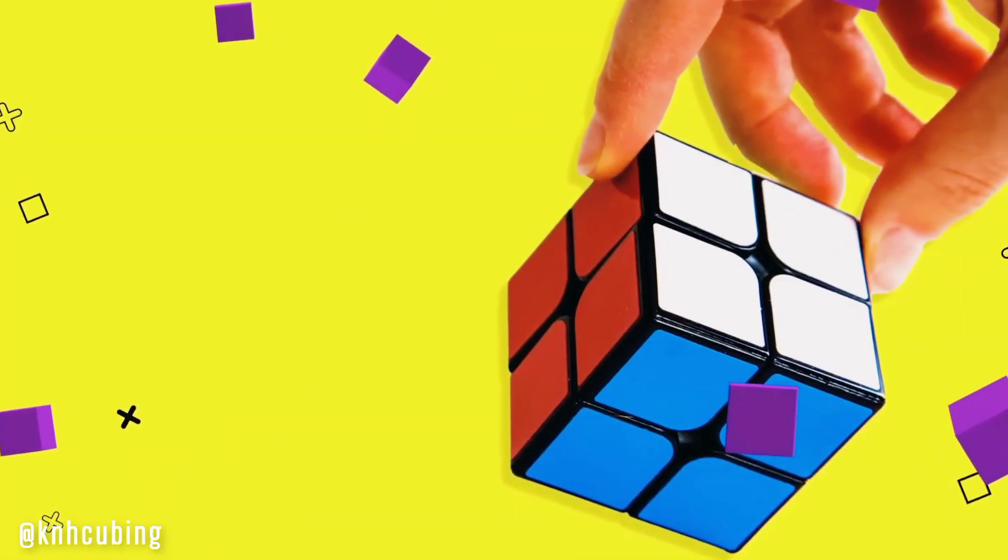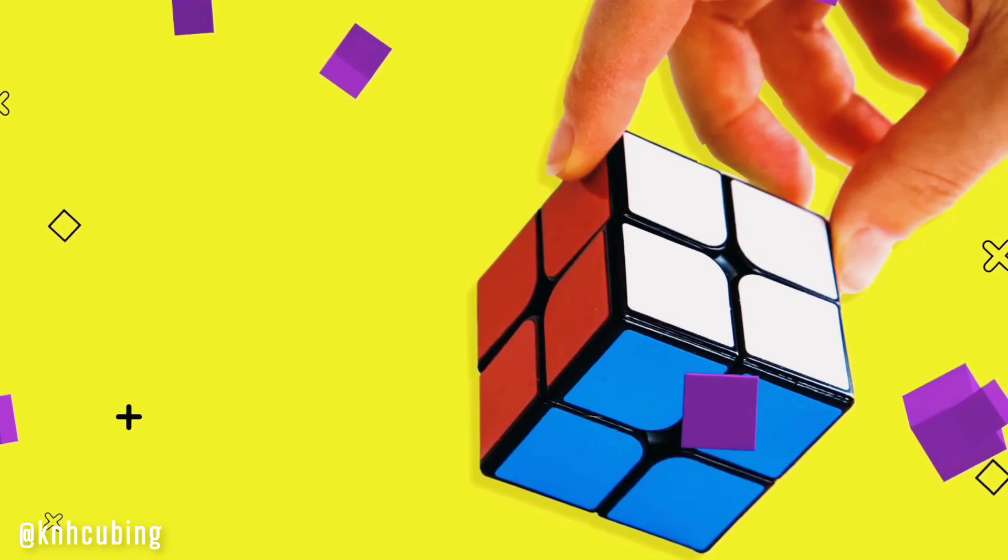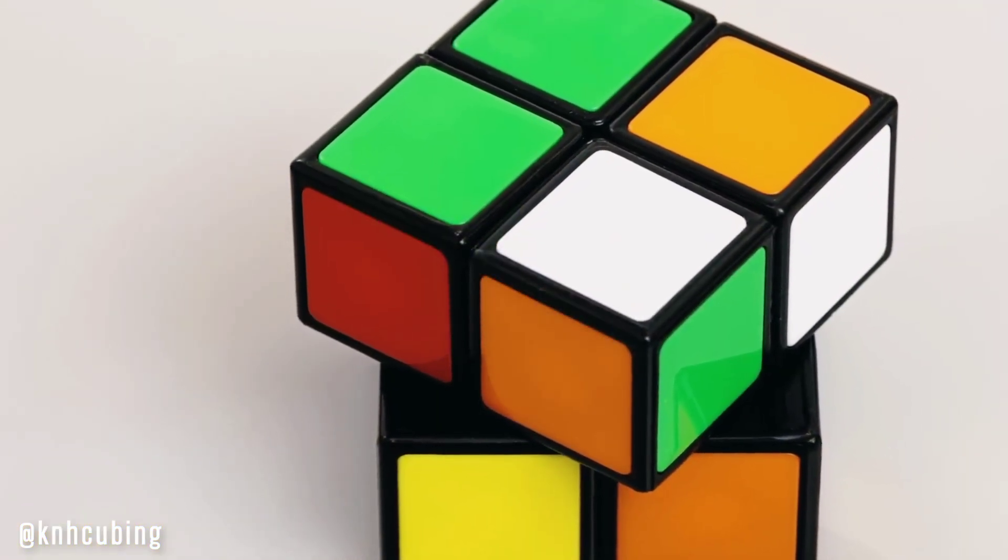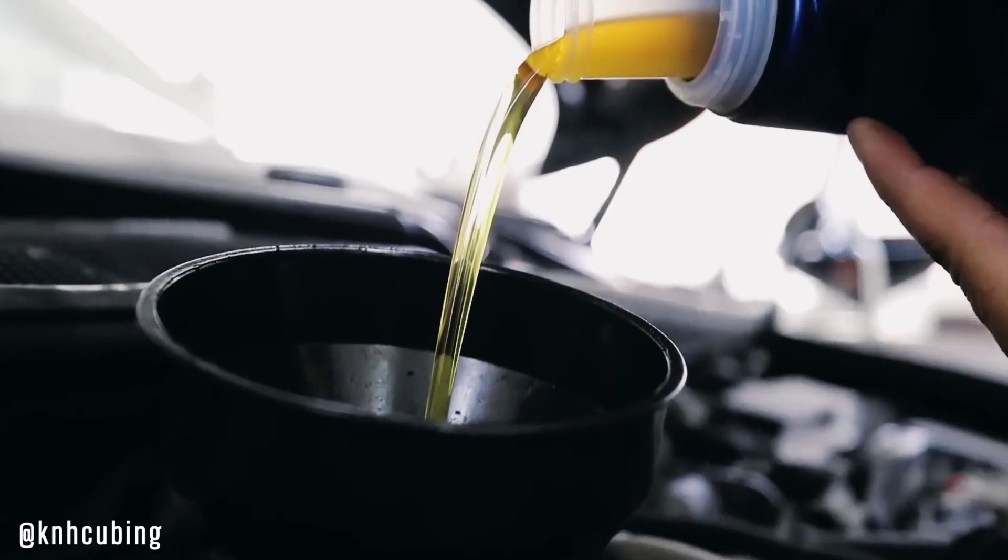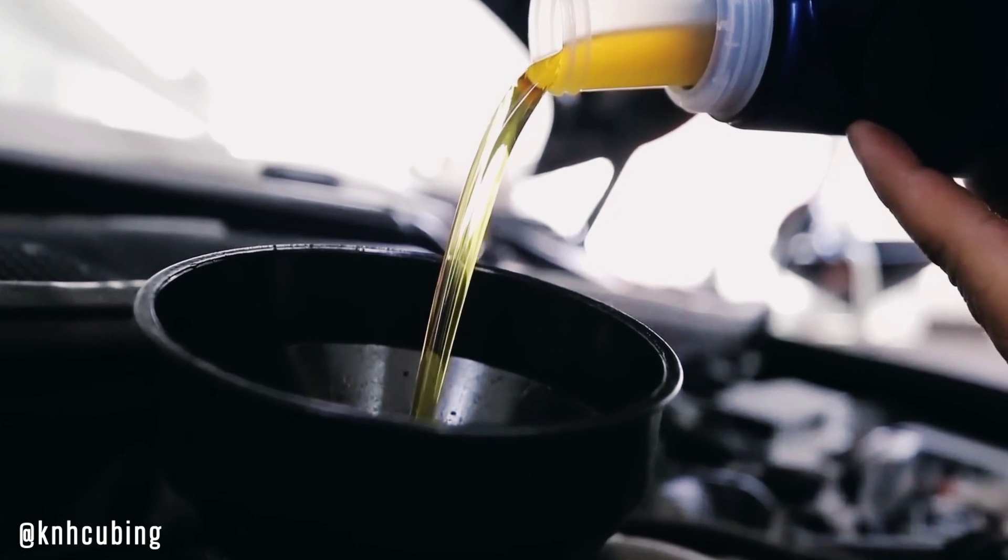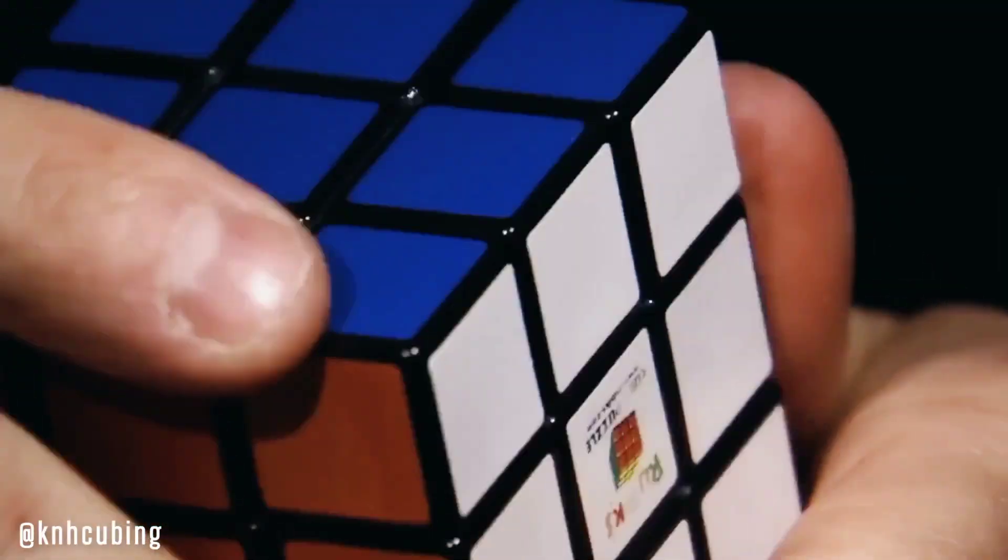There's also a 2x2x2 cube, a pocket cube. The record is held by a Polish speedcuber and stands at .49 seconds. I was surprised, but turns out, to make the cube rotate faster, the contestants lubricate it with oil. It is allowed to do it in the championships, too.